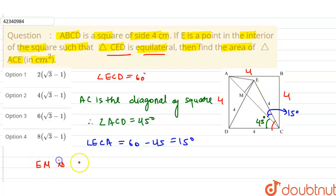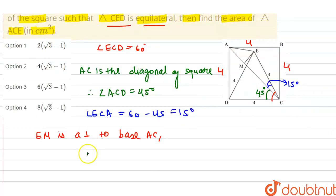EM is perpendicular to base AC. Draw a perpendicular from point E to AC, called EM. So this is the perpendicular. And here I have an angle of 15 degrees. Since I have an angle of 15 degrees, now sine theta is perpendicular to hypotenuse.